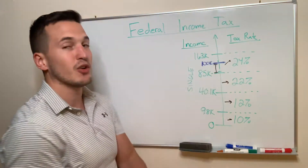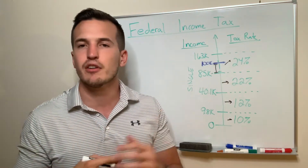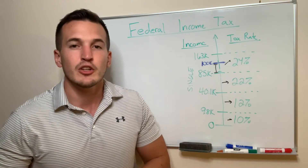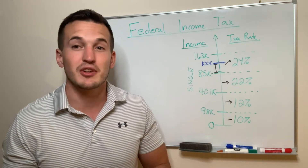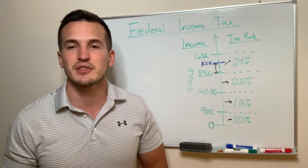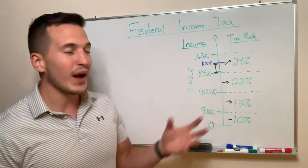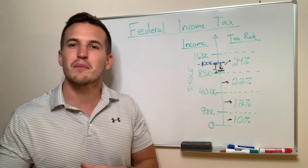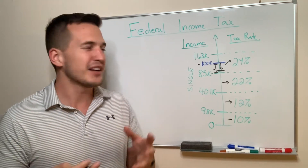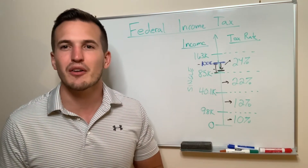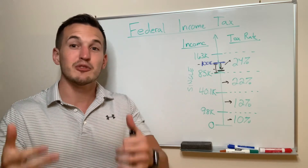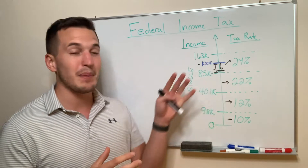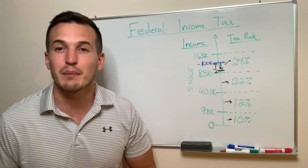These tax brackets go higher and cap over $500,000, where the maximum rate is 37%. We'll see if that changes with the new administration, but that's what it is right now — they can change every year. Understanding how federal income tax works is important because it helps you build your wealth. If you know how to reduce your taxable income, you take home more money by paying less to the government and build your wealth that much quicker.